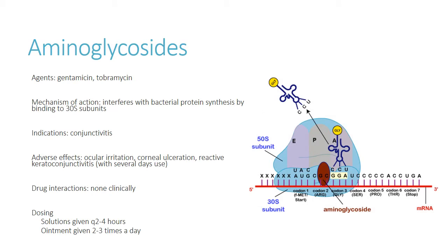We have a few aminoglycosides available. Gentamicin and tobramycin are the most common. Gentamicin is commonly given as a one-time dose to newborns — as soon as they're born, to prevent ocular infections from bacteria in the birth canal during vaginal delivery. That's probably the most common case you'll see gentamicin used for. That's why newborn babies always seem to have goopy-looking eyes right after birth — it's the antibiotic protecting them from any potential maternal bacterial exposure.